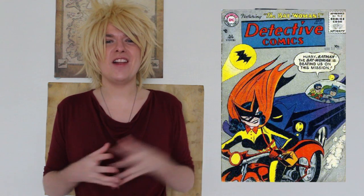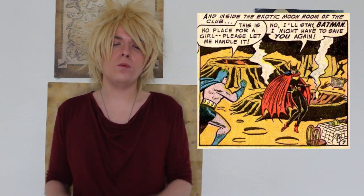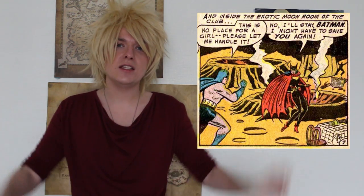Now Earth 1's Batwoman is actually quite interesting. We shall call her Kathy Kane. She started as Batwoman because she was so infatuated with Batman that she just had to get closer to him. So her way of doing this was to make herself a costume and begin crime fighting. In her civilian form, she was actually a very, very well-off heiress who did circus trapeze and stunt cycling as a living.